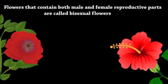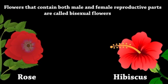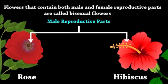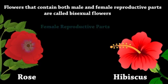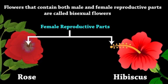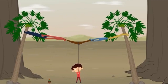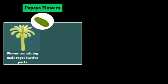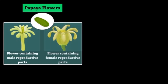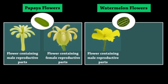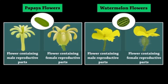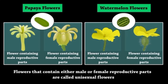Flowers that contain both male and female reproductive parts are called bisexual flowers. Hibiscus and rose are some examples of bisexual flowers. Flowers that contain either male or female reproductive parts are called unisexual flowers. Papaya and watermelon are some examples of unisexual flowers.